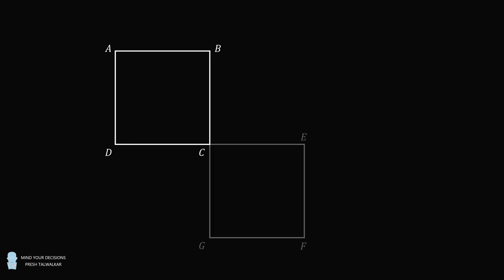Hey, this is Presh Talwalkar. ABCD is a square. To the bottom right of ABCD, construct an identical square CEFG.